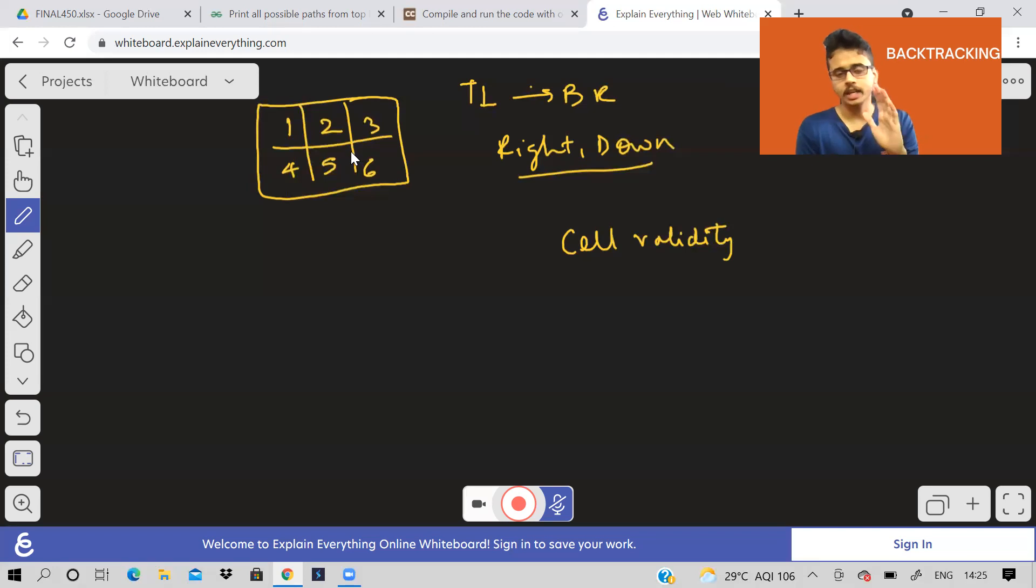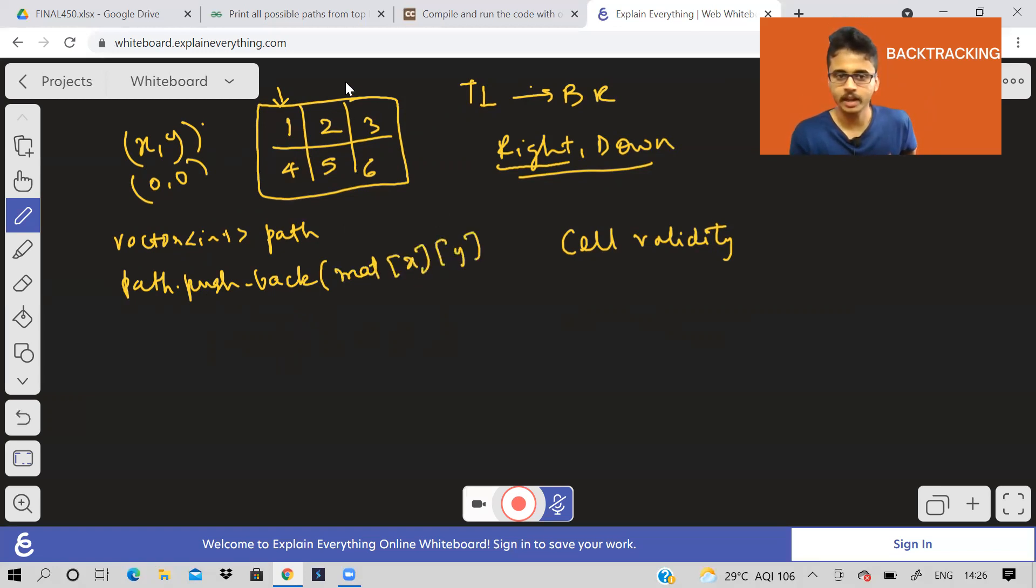And basically how are we using backtracking to solve this problem? So let me just do a dry run now. We are going to start from this cell, correct? 1. I will say, okay, I will go right first. So what I'll do is I will take a vector and let it be called as path. Basically it will tell me all the integers in the path. So I will do path.pushback. What I'll push back? Say, the cell has a coordinate X comma Y.